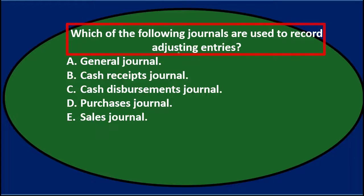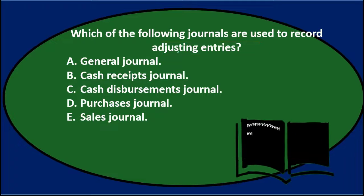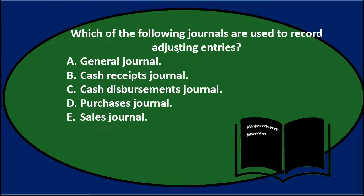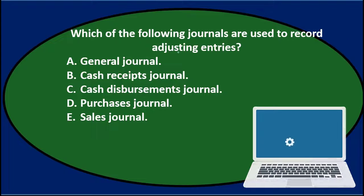After that, we take the unadjusted trial balance and put those adjusting entries in. Those adjusting entries make our financial statements more on an accrual basis. We would use adjusting entries in a similar fashion whether using a system with just journal entries or one with special journals.